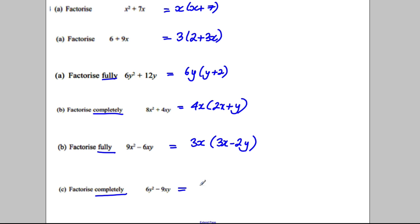The answer to this would be x times (x + 7) for one mark. The answer to this: you could take out a factor of 3, 3(2 + 3x) for one mark. Here when it says fully or completely, each are worth two marks because there's a number and a piece of algebra that can be factorized out. In this case you could take out 6 and y: 6y(y + 2). In this case 4 and x: 4x(2x + y). In this case 3 and x: 3x(3x - 2y). In the last case 3 and y: 3y(2y - 3x). Hopefully you found that video useful for your factorizing.